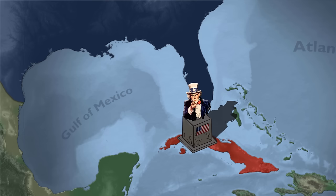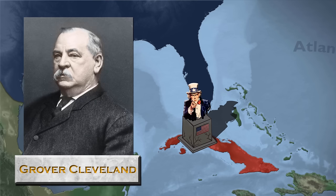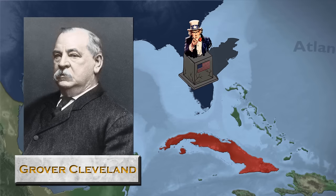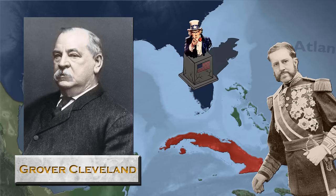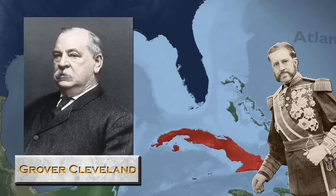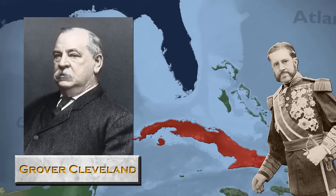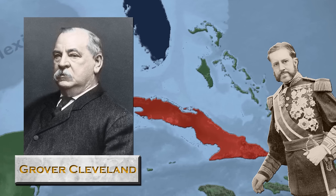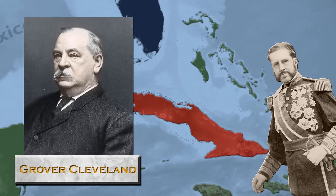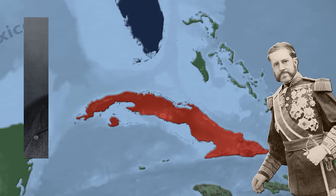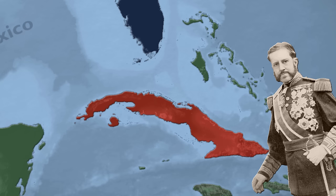Initially, US President Grover Cleveland declared neutrality at the start of Cuba's revolution, but anti-Spain sentiment grew as General Valeriano Weyler enacted a new Spanish re-concentration policy, forcing thousands of Cubans into areas guarded by Spanish troops that lacked basic levels of sanitation, food, and shelter, with the punishment for refusing being swift execution.